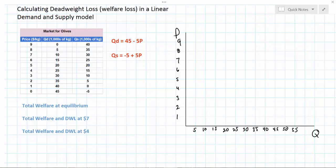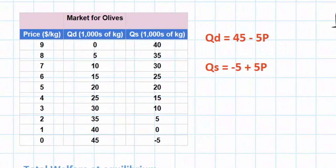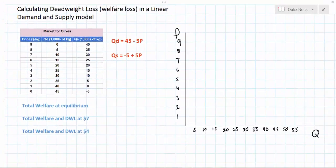You might also want to have watched a video on calculating consumer and producer surplus in the linear demand and supply model. Here on the left we have a demand and supply schedule for olives, showing the range of prices from $0 to $9 and the quantities demanded and supplied at those prices. From the data in this table we have derived the demand and supply equations, which we see here, and we are now going to plot the demand and supply curves on the graph.